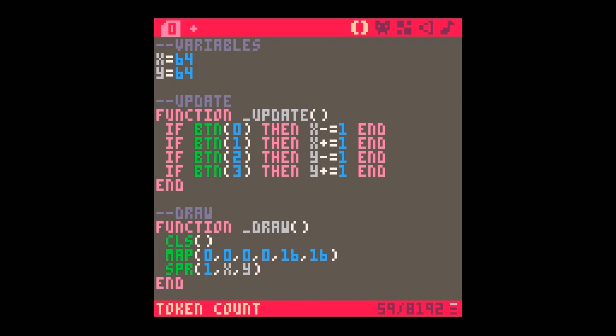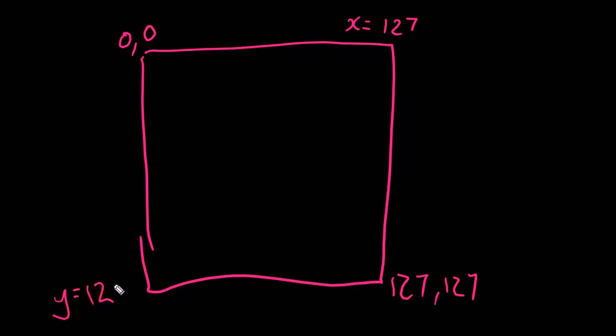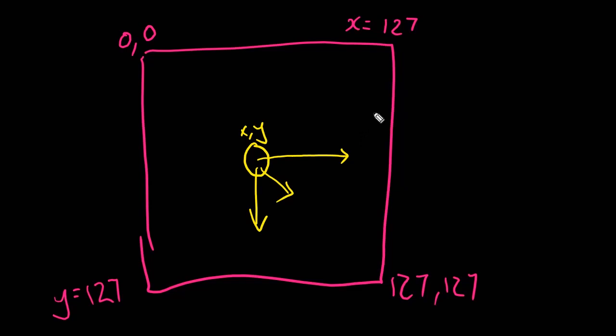Let's think about what's actually going on when we want to start moving around the screen. As always with PICO-8, we have a screen that's 0 up here and 127, 127 down there — so this edge is 127 for x, and the y is 127 at the bottom. If we've got our little character moving around the screen with an x and a y value, let's deal first with the wrap-around situation.